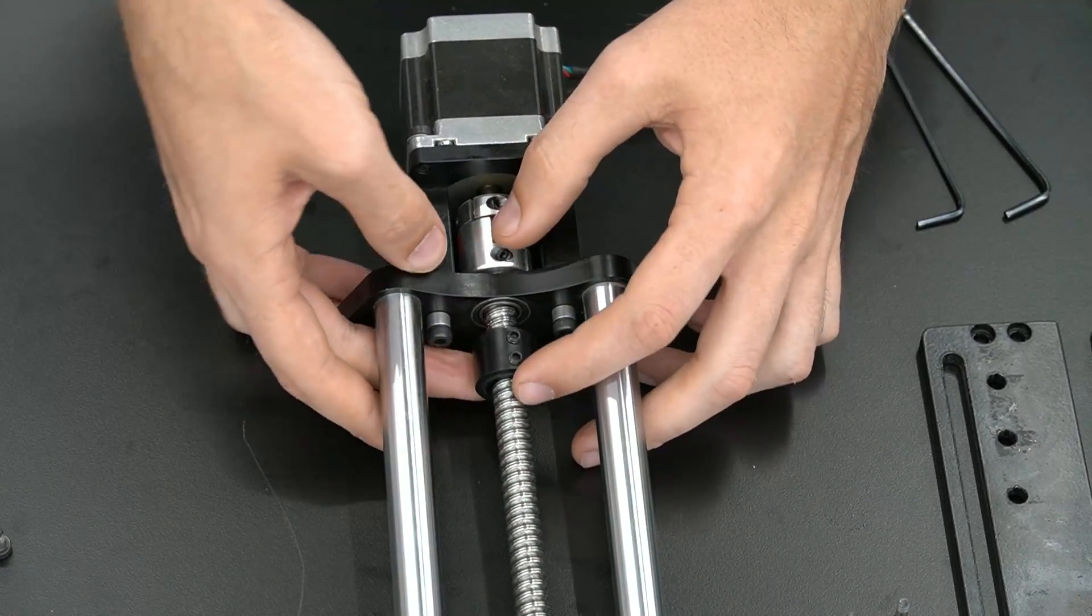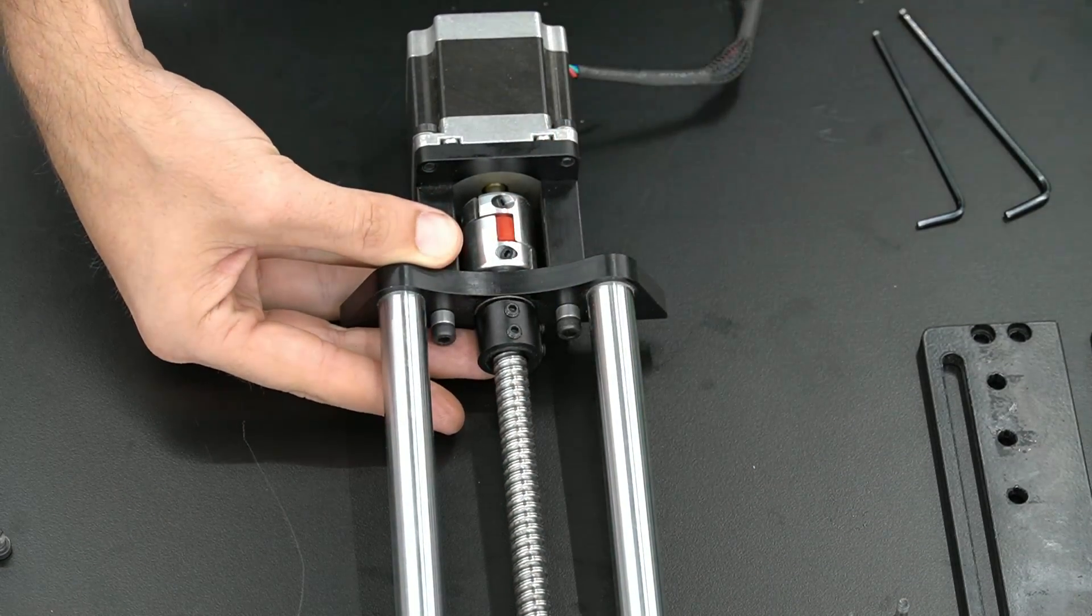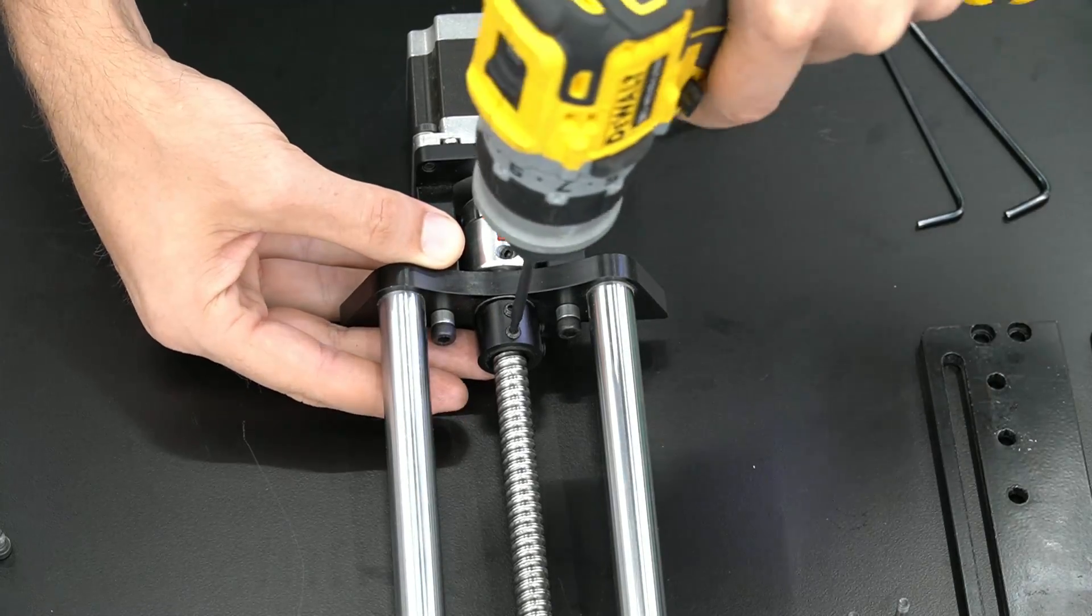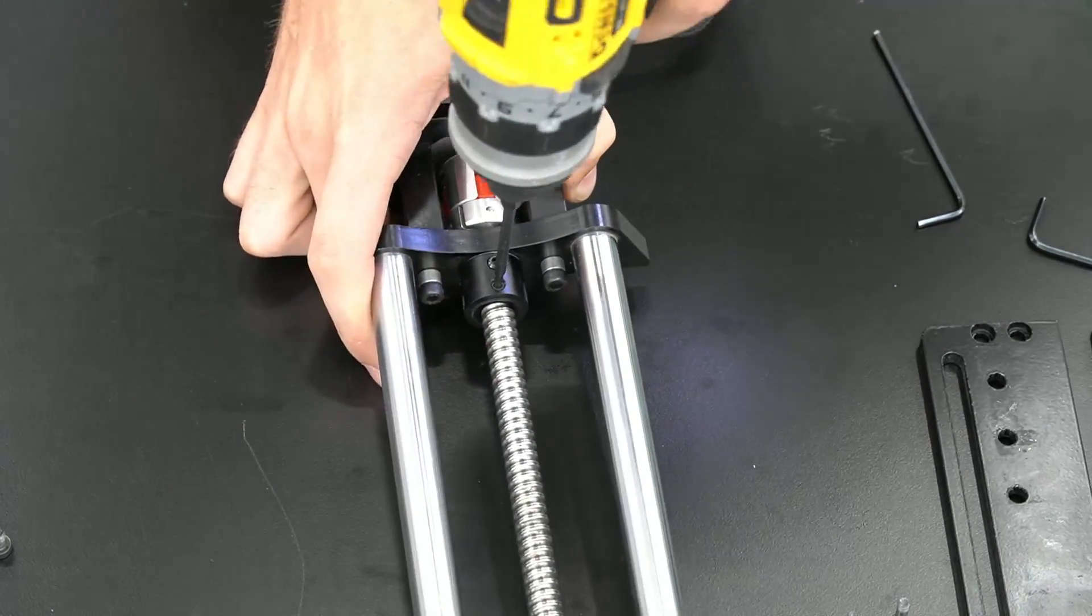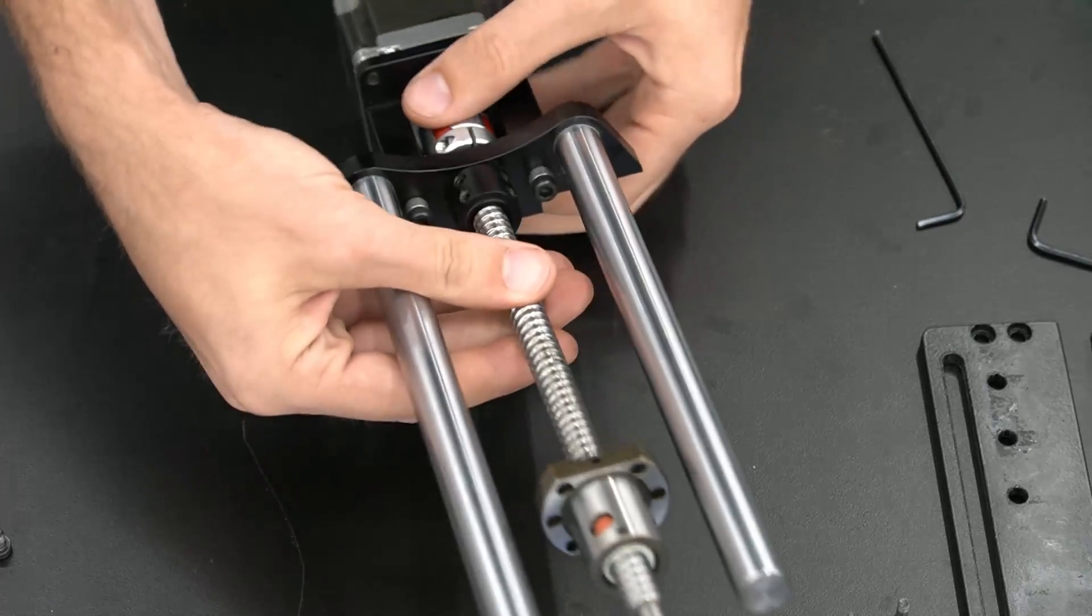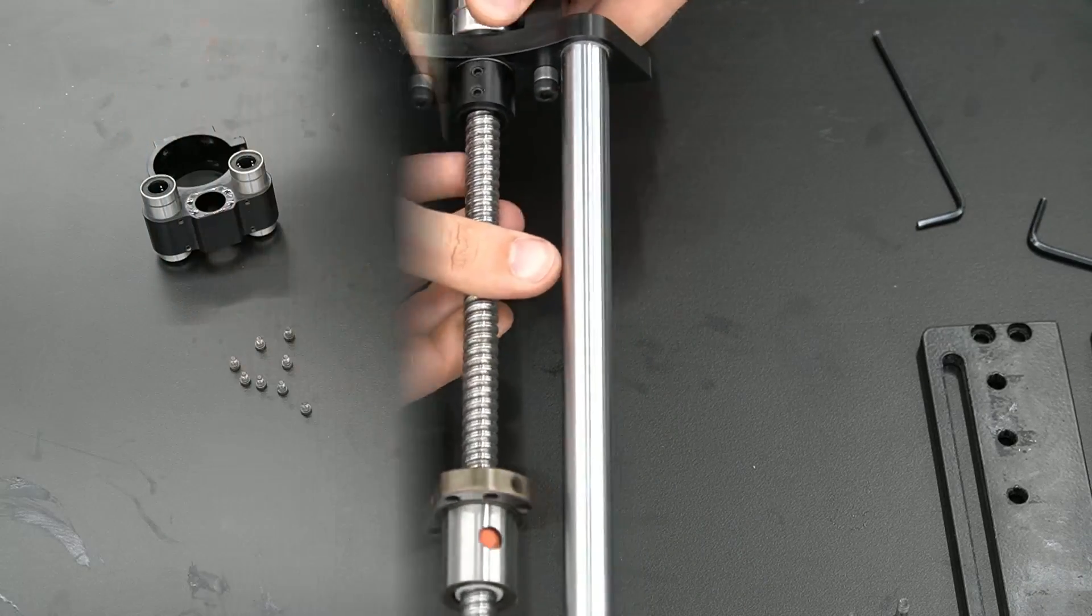With our coupler secured, we can now slide our black coupler up our ball screw. We're going to leave a small gap at the top of this between the bracket and the coupler. Then we can tighten down our four set screws locking it in place.